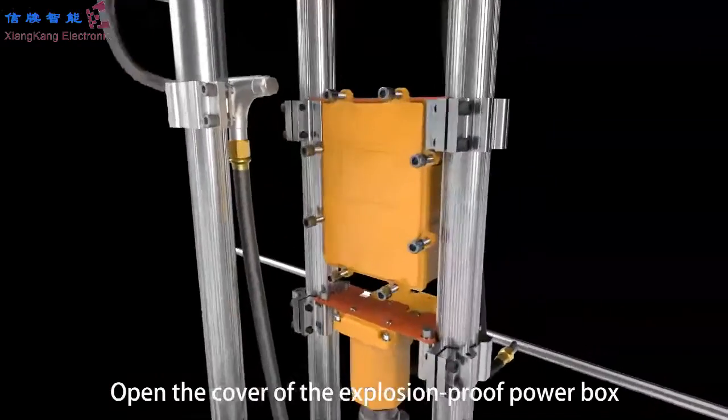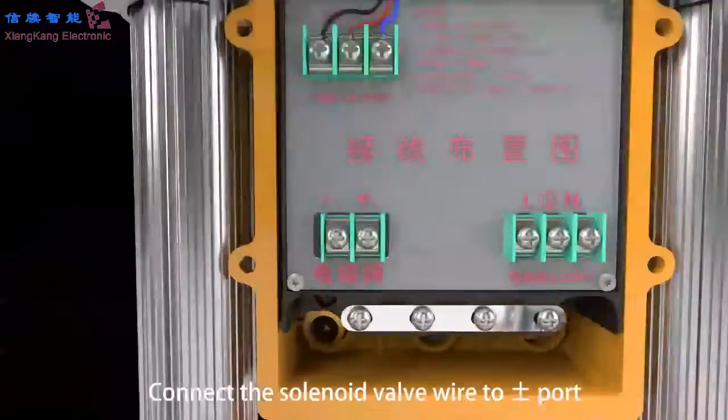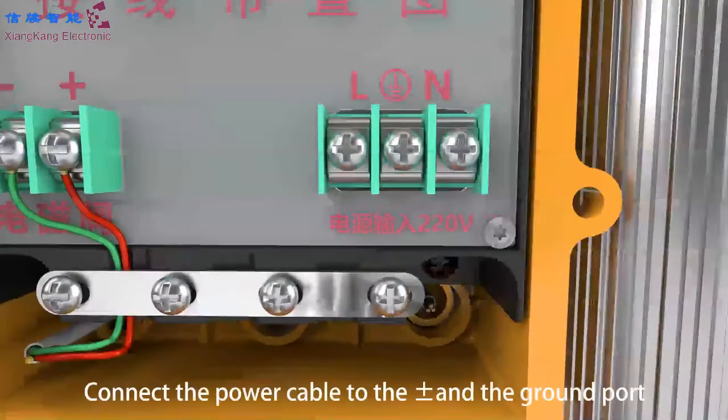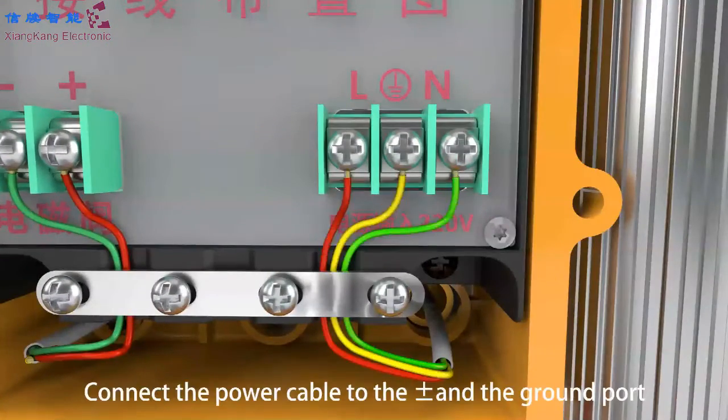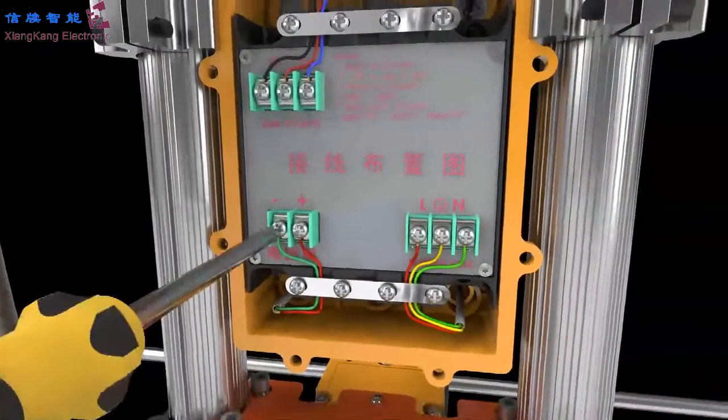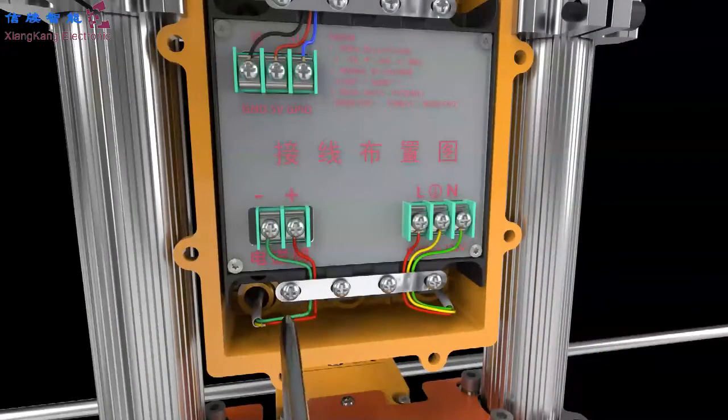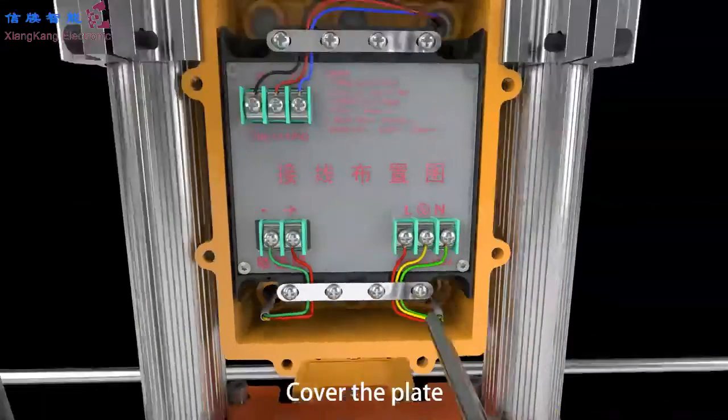Open the cover of the explosion-proof power box. Connect the solenoid valve wire to plus or minus port. Connect the power cable to the plus or minus and the ground port. Tighten all screws. Cover the plate.